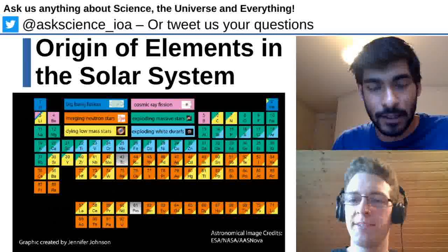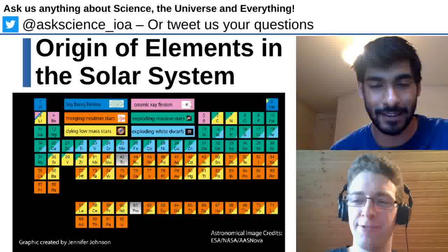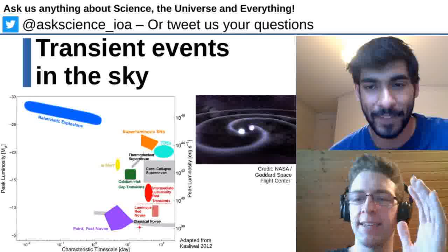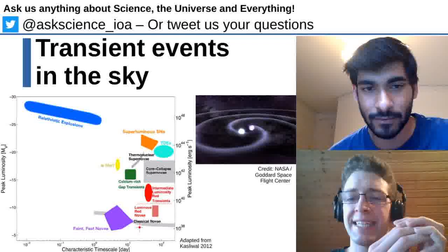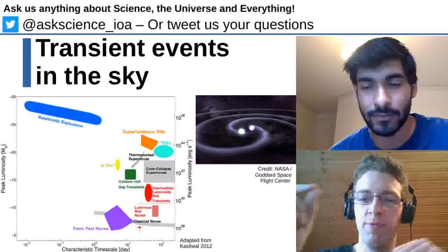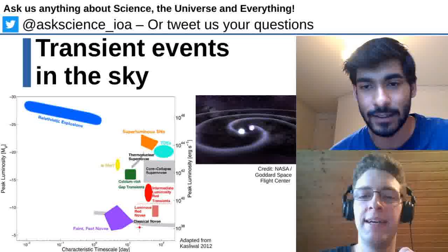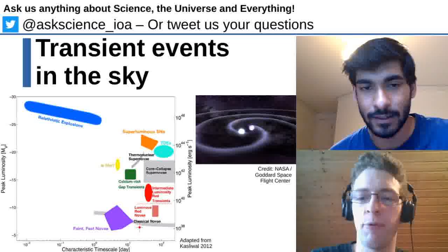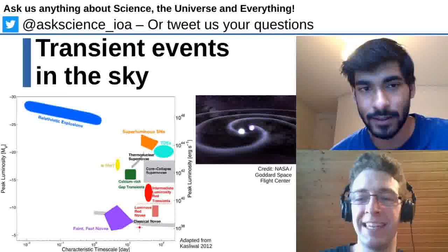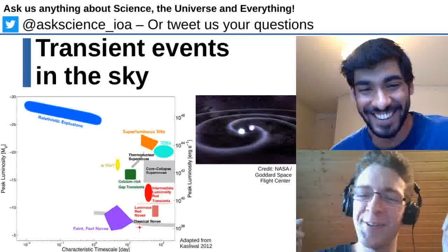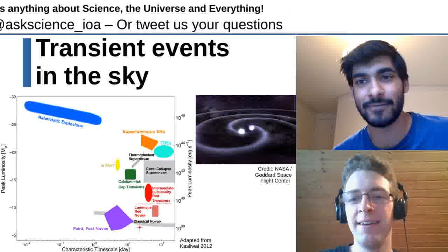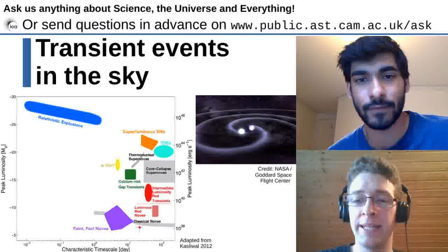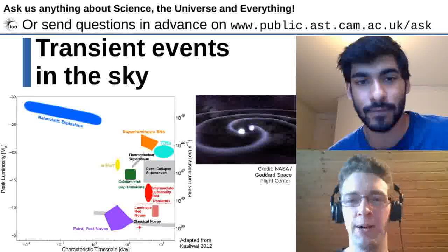Supernovae are also important for forming new stars and eventually solar systems. To form a star, a big cloud of gas needs to be compressed into a small point. But if the gas is hot, it's hard to compress — all the particles are flying around and you can't make it smaller. The gas needs to cool down, and this is really inefficient with just hydrogen or helium. Astronomers call everything heavier than helium a metal. As soon as there are metals in the gas — produced by earlier supernovae — it cools much more efficiently, allowing stars to form much more easily.